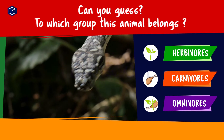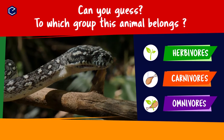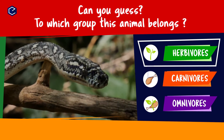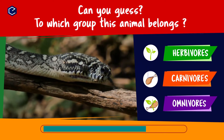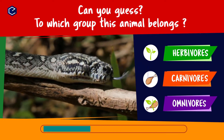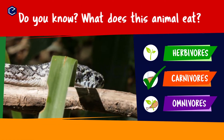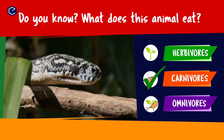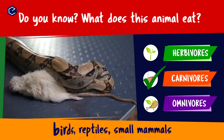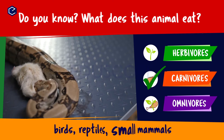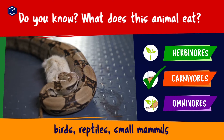Can you guess to which group this animal belongs? Do you know what this animal eats? A snake eats birds, reptiles and small mammals. So snake is a carnivore.